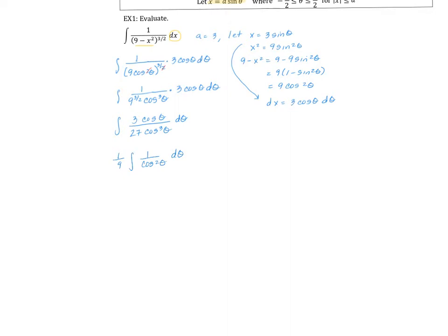That's a nice strategy to use if you want to get rid of a square root. I don't know what one over cosine squared is when I integrate, but I do know what the integral of secant squared is, and that would just be tangent. So I have one ninth tangent of theta plus my constant C. The problem is I started out with x, not theta, so I'm going to have to replace theta with something in terms of x.